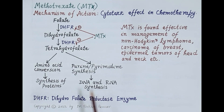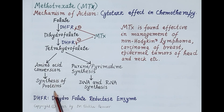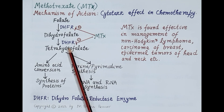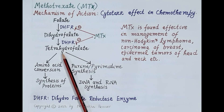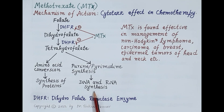Tetrahydrofolate acid is also necessary for amino acid conversions and therefore for the synthesis of proteins. Methotrexate inhibits the enzyme dihydrofolate reductase, inhibiting the synthesis of tetrahydrofolate acid, and thus inhibits the synthesis of proteins as well as DNA and RNA, which inhibits proliferation or multiplication of cells.